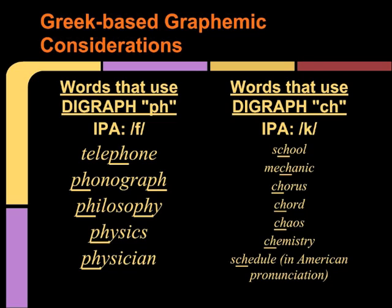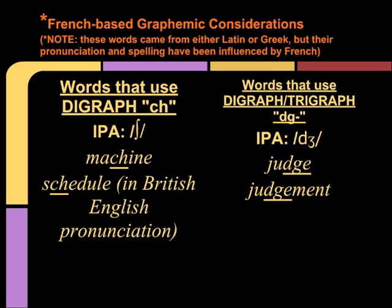In words that use the digraph C-H but instead of the CH sound they produce the K sound, we see these in words such as 'school,' 'mechanic,' 'chorus,' 'chord,' 'chaos,' 'chemistry,' and 'schedule.' French, which had a Latin basis, sometimes changed particular spellings by their French pronunciation. So for example, the C-H in these words is pronounced as the SH sound instead of a CH or K sound, as in words such as 'machine' or 'schedule' in British English pronunciation. Also words that use the digraph or trigraph D-G or D-G-E, such as 'judge' or 'judgment.'